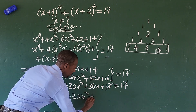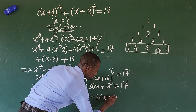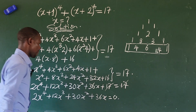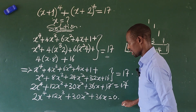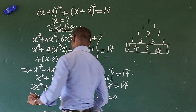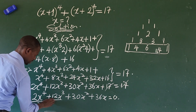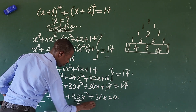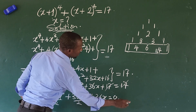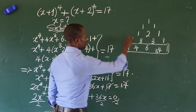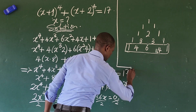We have 2x to the power of four plus 12x to the power of three plus 30x squared plus 36x equal to 0. Now, 2 is common to everything here, so we can factorize 2 out. We divide everything by 2 and let's continue on this side and see what this gives us.